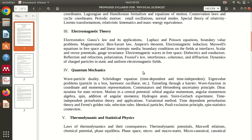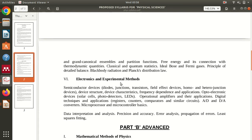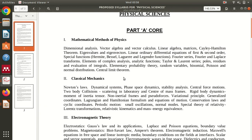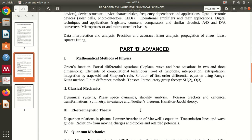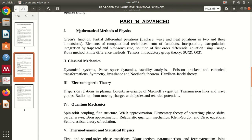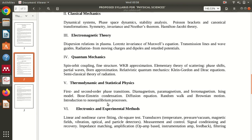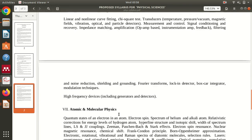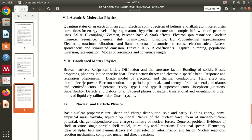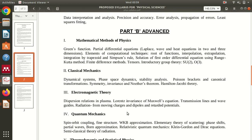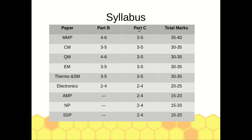The core subjects in Part B are: Mathematical Methods of Physics (MMP), Classical Mechanics, Electromagnetic Theory, Quantum Mechanics, Thermodynamics and Statistical Physics, and Electronics and Experimental Methods. These are the six core papers with 3.5-mark questions. In Part C, the advanced part, these same six subjects appear again, but additionally we have Atomic and Molecular Physics, Condensed Matter Physics (Solid State Physics), and Nuclear and Particle Physics.